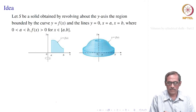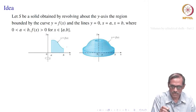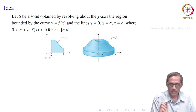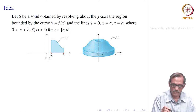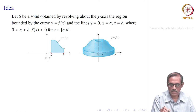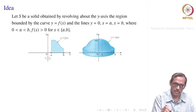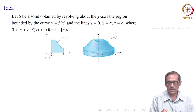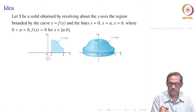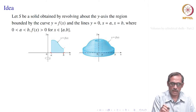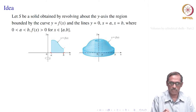Let us consider this. We have a curve y equal to f of x; it is continuous and remains positive inside the interval a to b. We have the area of the region bounded by x equal to a on the left, x equal to b on the right, the x-axis below, and y equal to f of x on top. This region is revolved around the y-axis, the line x equal to 0.